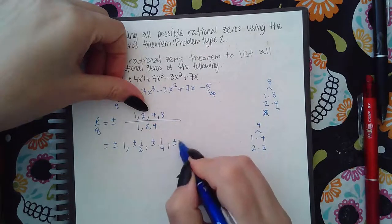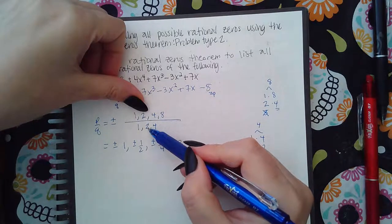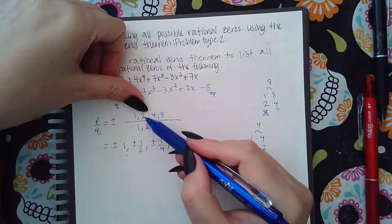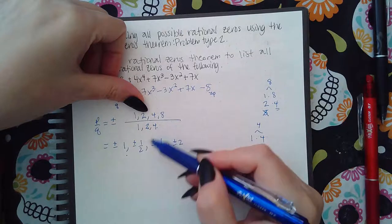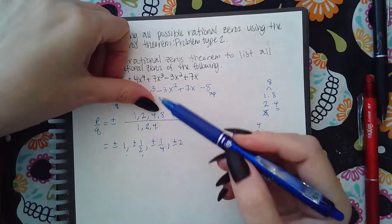2 over 1 which is 2. 2 over 2 reduces to 1 and that's already on the list so I don't need to repeat it. 2 over 4 reduces to 1 half which is already on the list. I don't need to repeat it. So we move on to the 4.